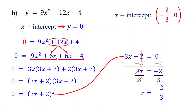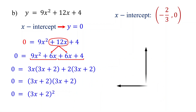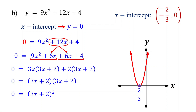Therefore, the x-intercept of the parabola is the point (negative 2/3, 0). If you plot the graph of this quadratic function, you will notice that the parabola touches the x-axis at this point. Notice that since the parabola has one x-intercept, it touches the x-axis only once. By the way, if you want to learn how to graph a quadratic function step by step, please check the link in the description after you finish watching this video.